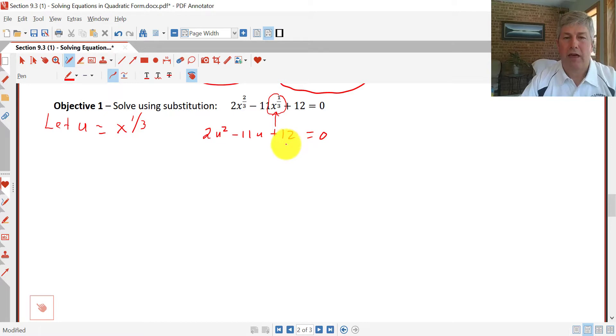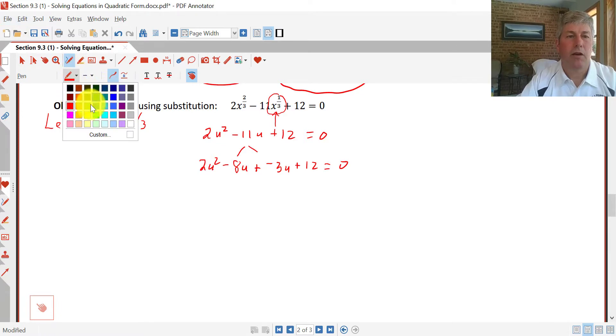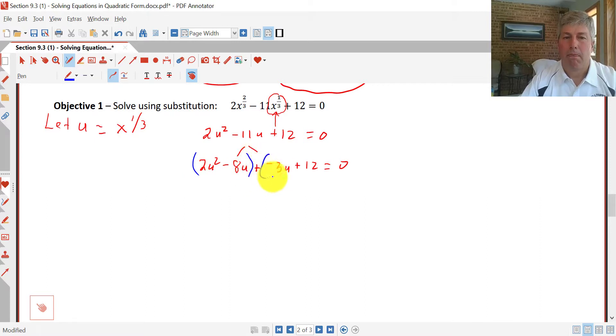we just get 2u² - 11u + 12 = 0. So we go ahead and factor that, factor by grouping. Factors of positive 24 that add up to a negative 11 are going to be negative 8u, negative 3u. So I'm going to write that as plus or minus 3u. Bring down our plus 12, bring down our 2u². That's still equal to 0. We do our factor by grouping.